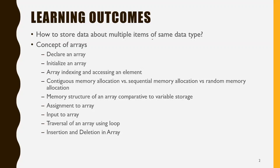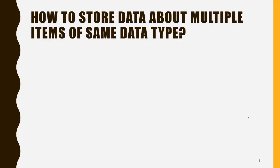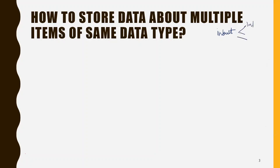Let us start from the concept of same data type. What do you understand by data type? All of you know that there are some data types available in C. The inbuilt data types available in C are integer, character, and float.